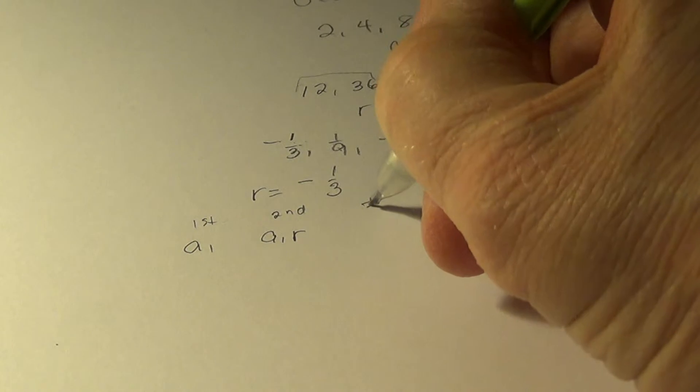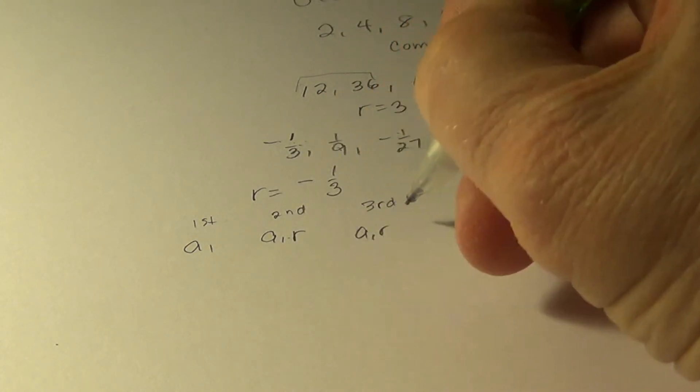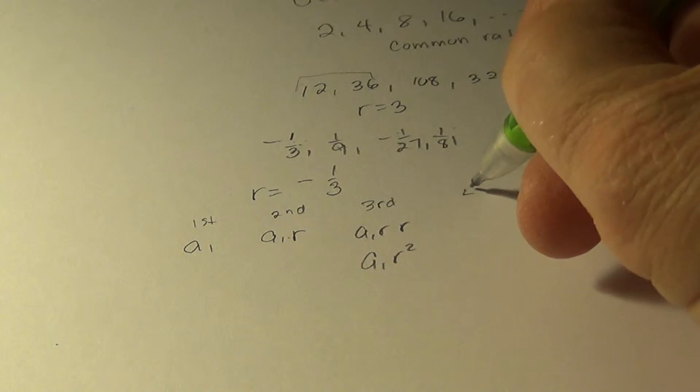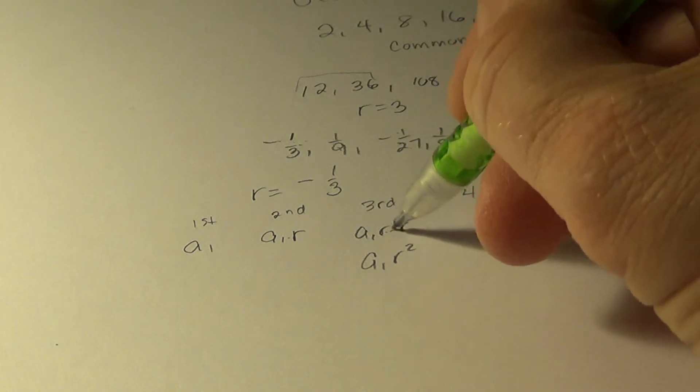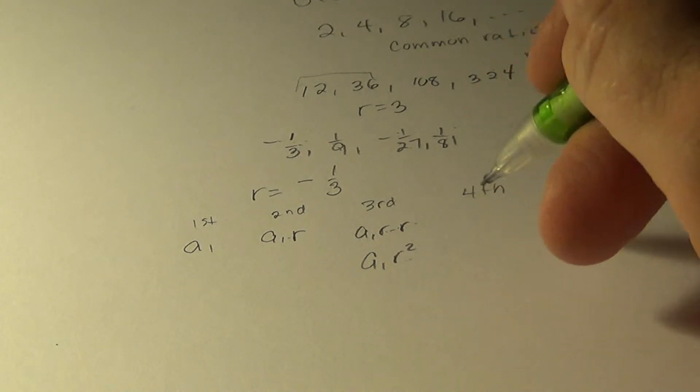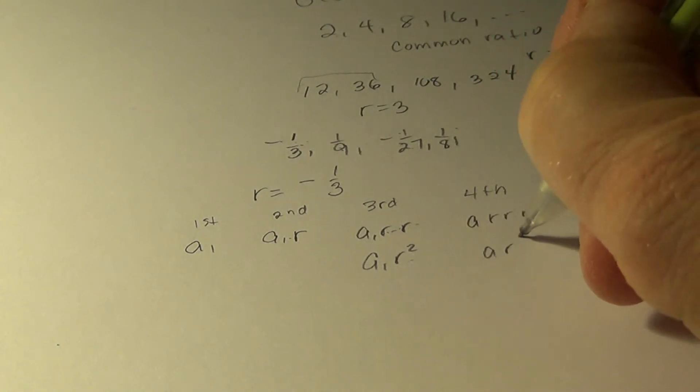Our third, we'll take the second term and multiply it by the common ratio again. So that's A1 R squared. And the fourth, we'll take this, or this, they're the same, and multiply it by another R. So we get A R R R, or A R cubed.